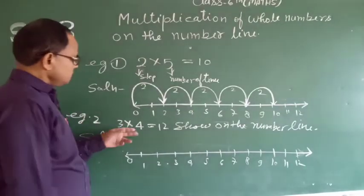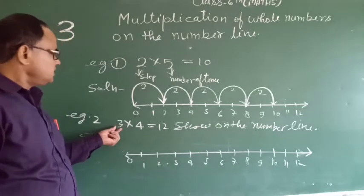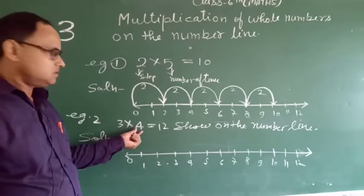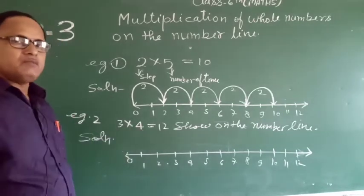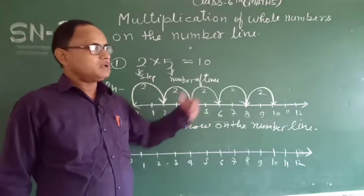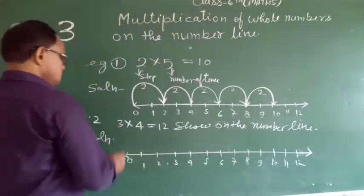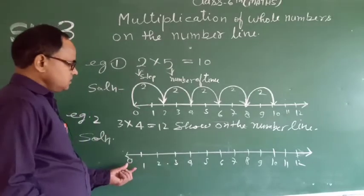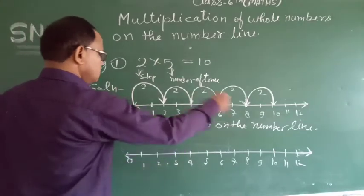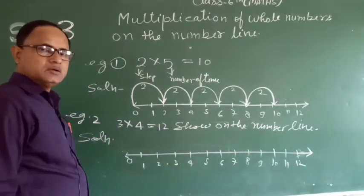Look here — we see that 3 is the step and 4 is the number of times by which 3 moves toward the right side. Thus we take steps of 3 and move 4 times toward the right side.